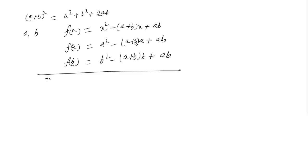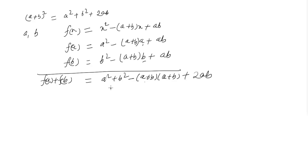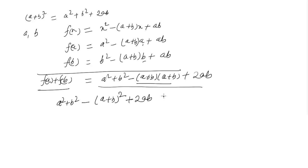Now we add these two quantities: f(a)+f(b) gives a²+b² - (a+b)(a+b) + 2ab = 0, which is a²+b² - (a+b)² + 2ab = 0. Since a and b are the zeros, this whole quantity equals zero. So this implies a²+b²+2ab = (a+b)², which is our proof for the second identity.